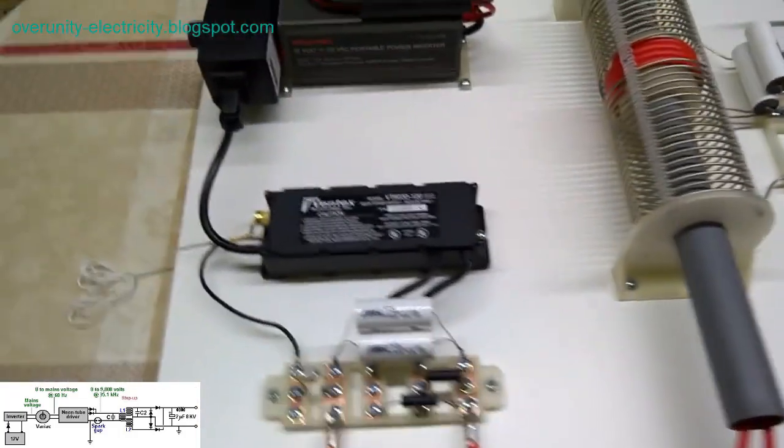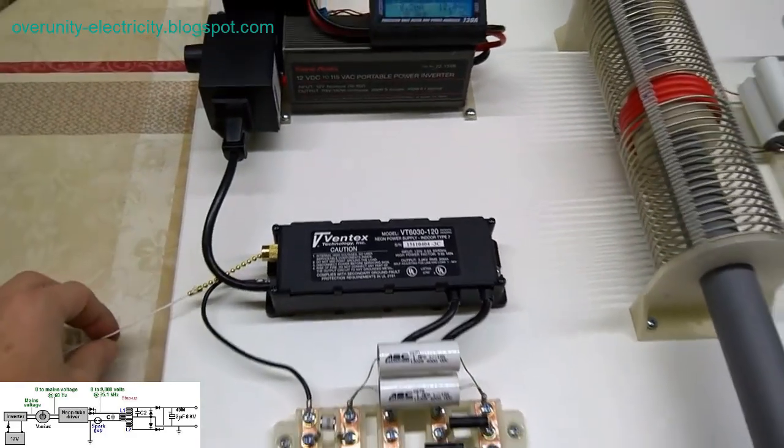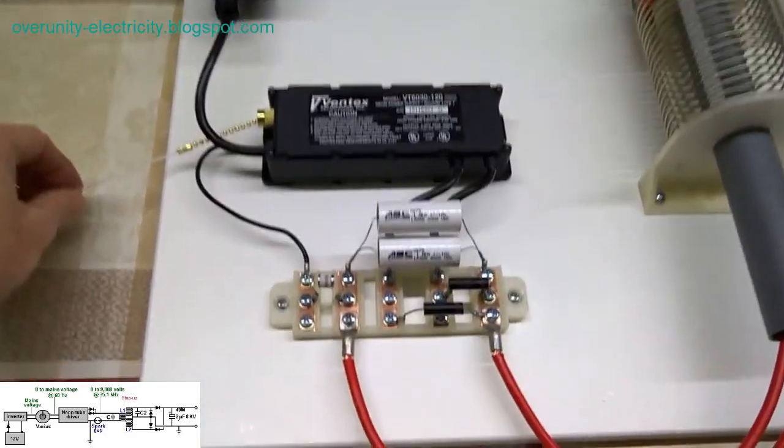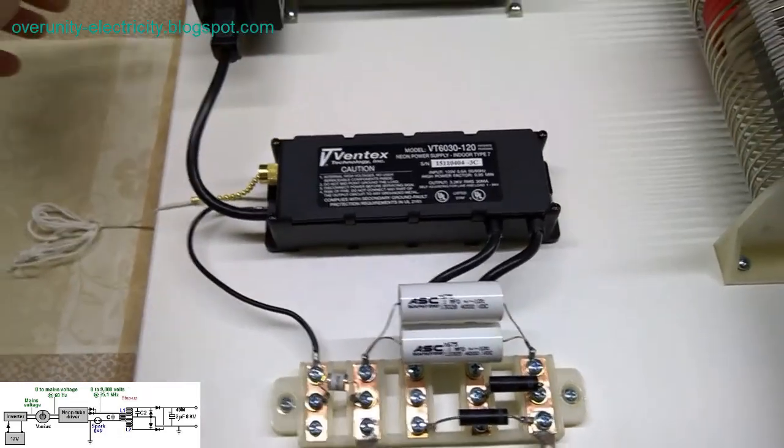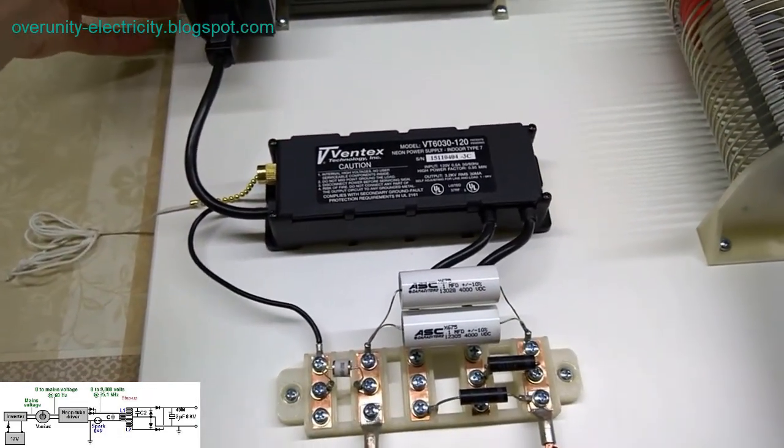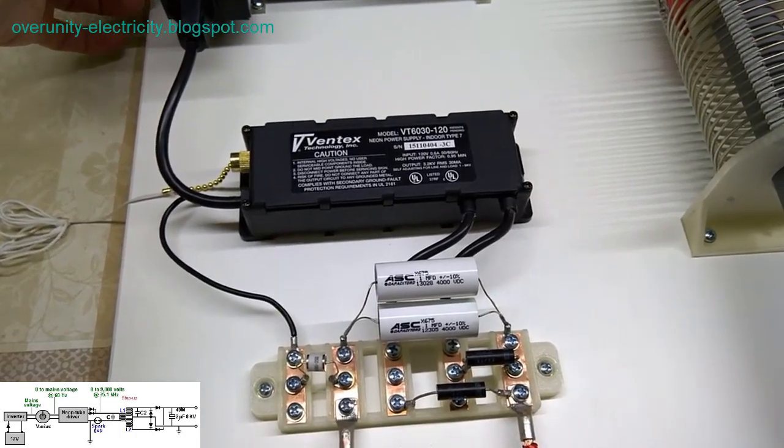Unveiling the Power of Frequency: Smith's generator harnesses the power of frequency to create high voltage outputs. By imposing a specific frequency, such as 35,000 cycles per second on the primary coil,